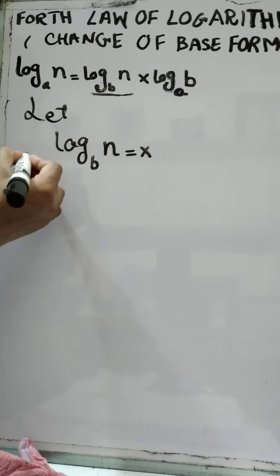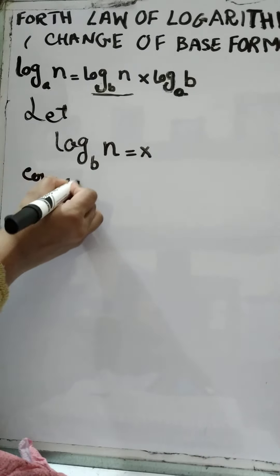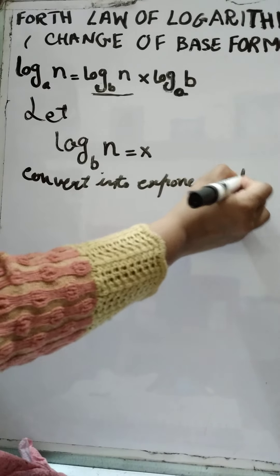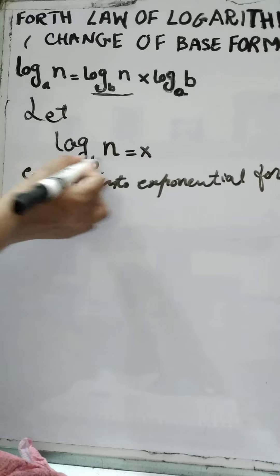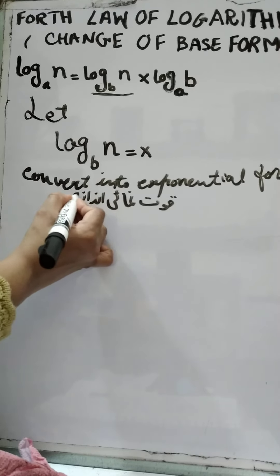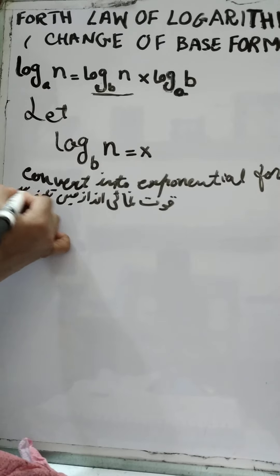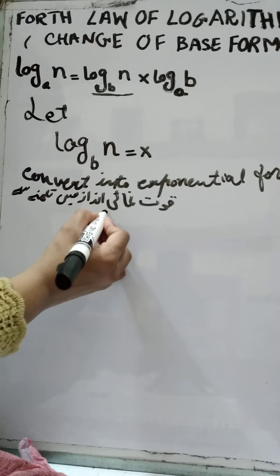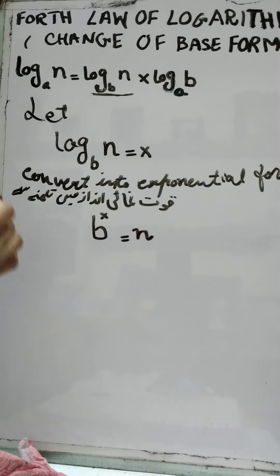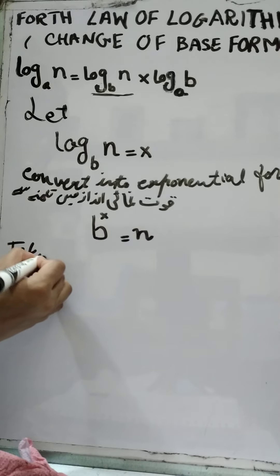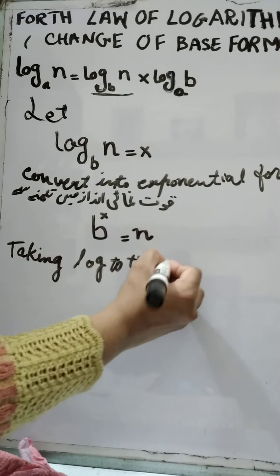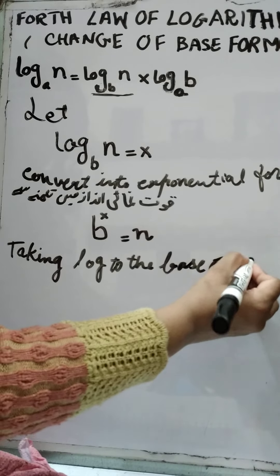Now we will convert this value into exponential form. We write the base and these values will become the power, and n is equal to the right side. Okay, taking log to the base of a on both sides.